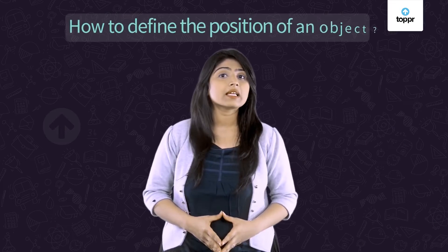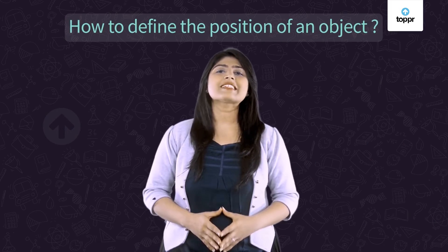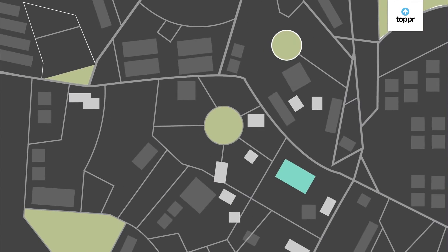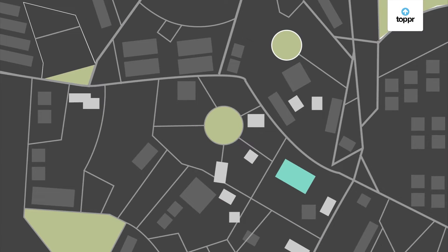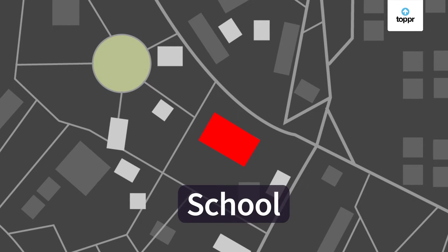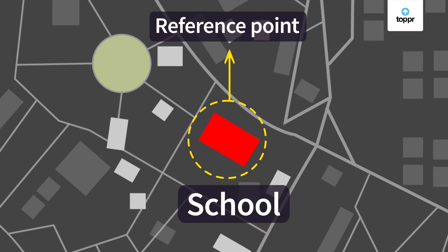But how do we define the position of an object? Let's understand this with a real life situation. Suppose you ask your friend for the location of his house and he only tells you that it is far away. Just this information won't help you — even Australia and Antarctica are far away. To reach your destination, you need to know exactly where it is. So you ask your friend for any landmark nearby, and he tells you it is close to your school. Now you have an idea where his house might be — you have a reference point.